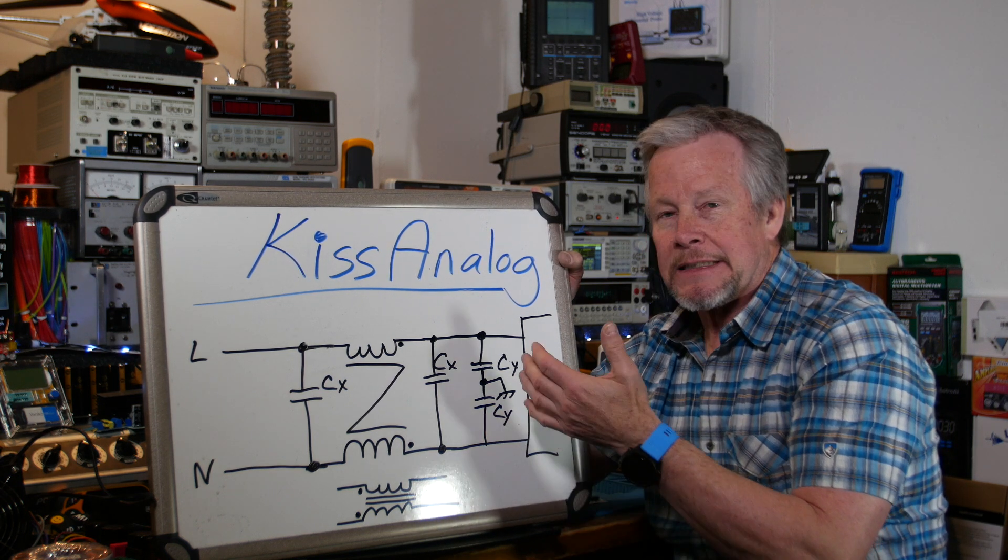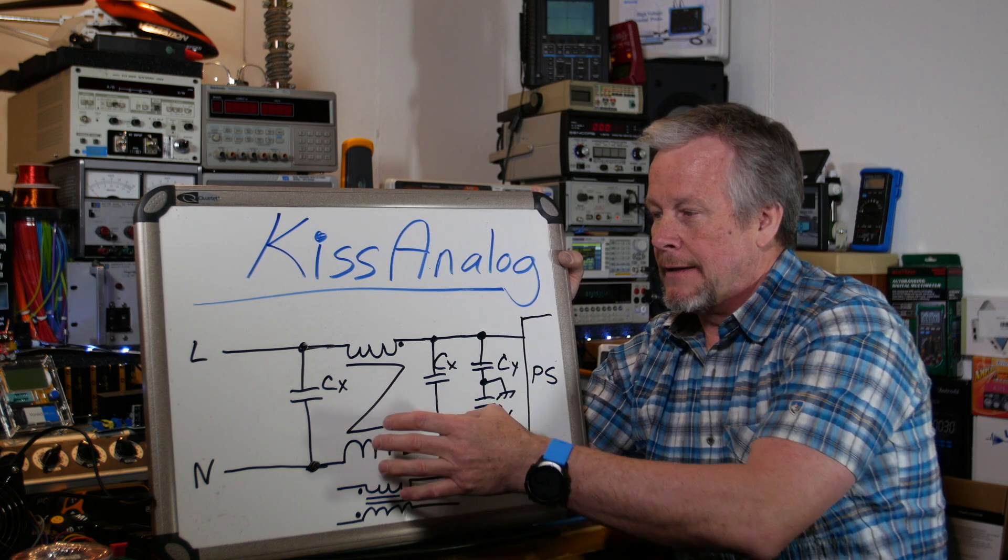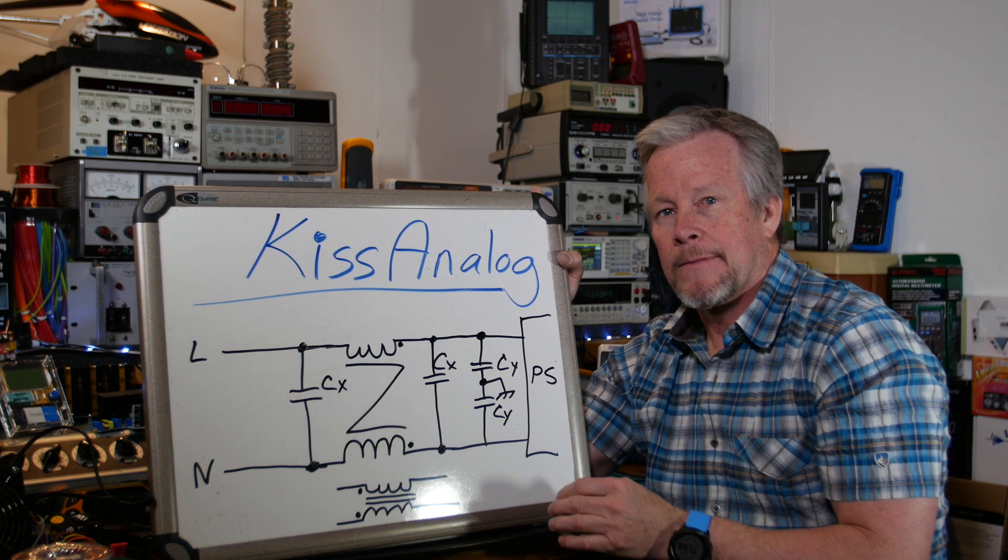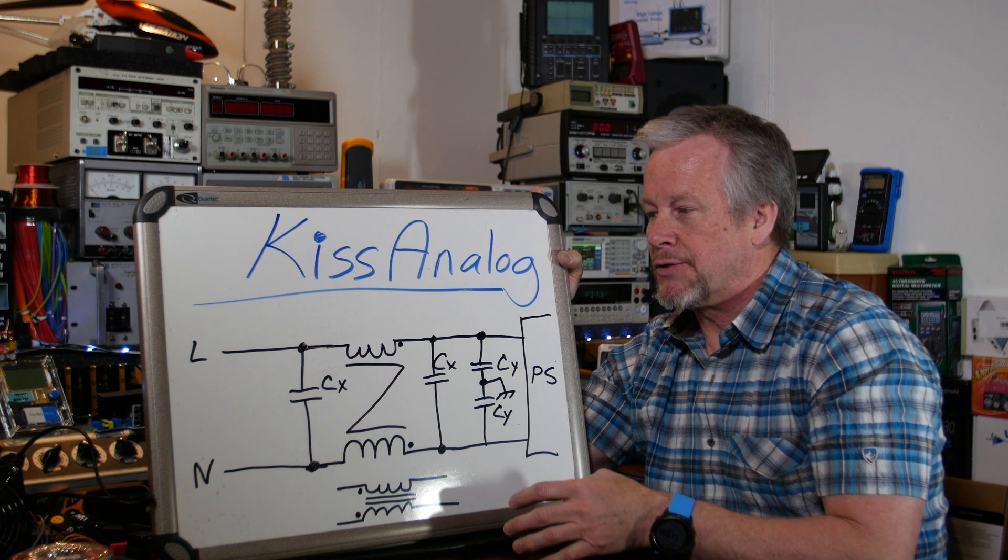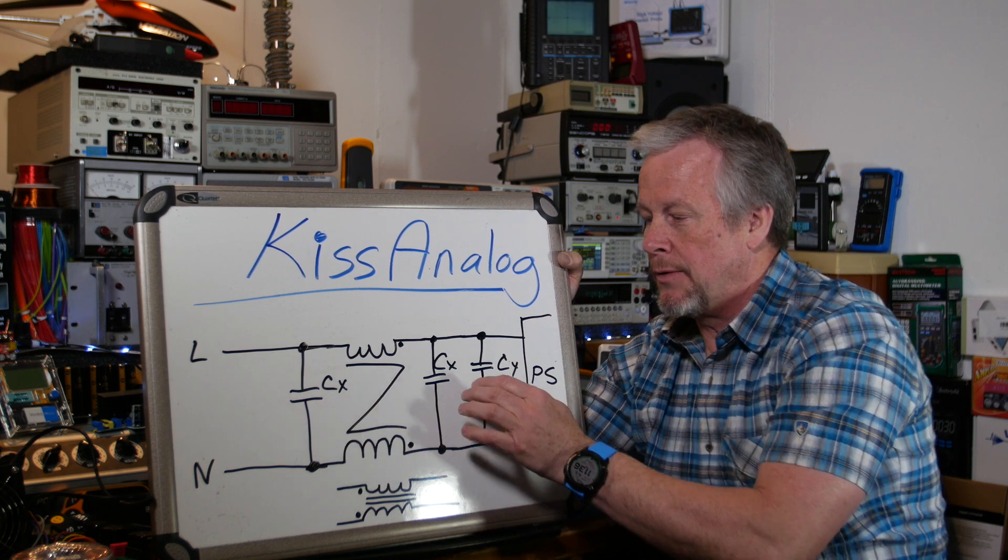Maybe just in a specification and data sheet somewhere. But in residential use, like in the home use, if you're designing stuff for that, it needs to be X2 and Y2. And for industrial three-phase higher voltage system, then it's X1, Y1.